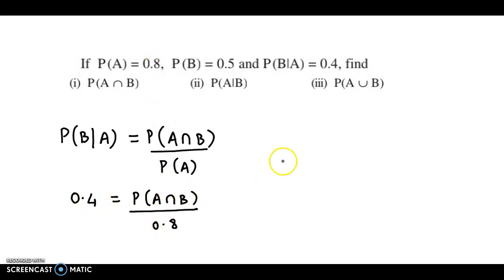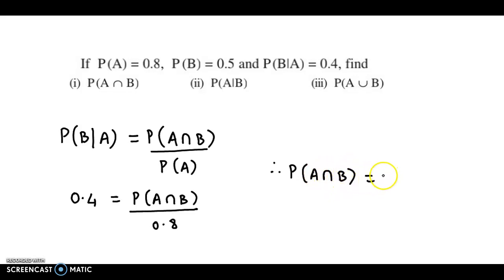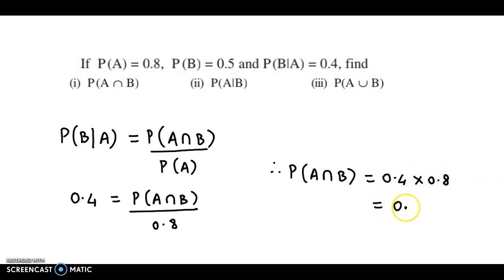If we multiply, we get the value of probability of A intersection B, which will be 0.4 into 0.8. So this value is 0.32.